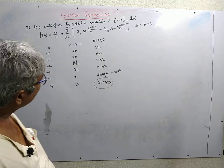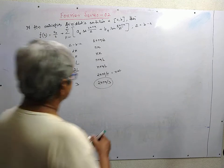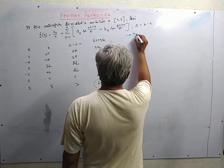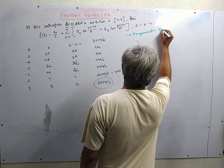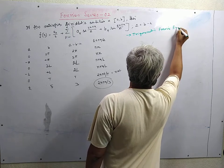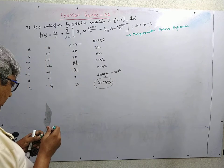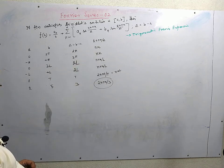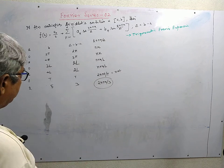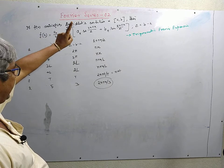Whatever the interval, the argument will be adjusted accordingly. This is called the trigonometric Fourier series — we will encounter other types of Fourier series in future. In future classes we shall also encounter the complex Fourier series. To distinguish it from the complex Fourier series, this is called the trigonometric Fourier series. The statement of the Fourier series will be completed when we specify the values of a_n and b_n.